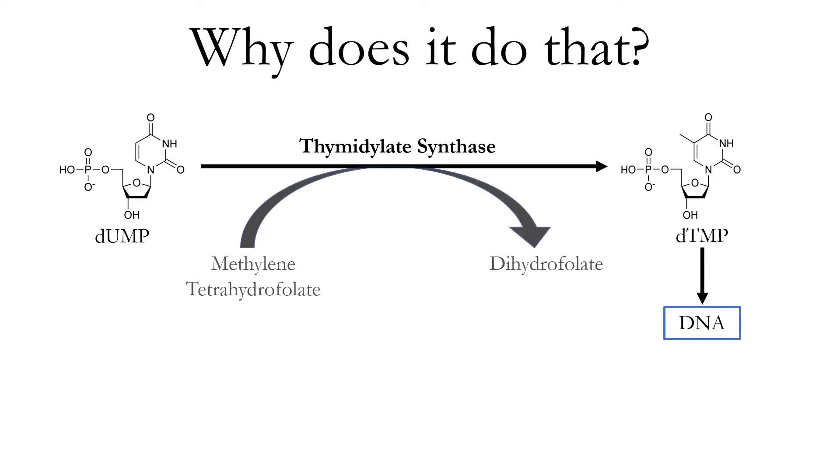This pathway requires the oxidation of methylene tetrahydrofolate into dihydrofolate, and that methylene tetrahydrofolate comes from regular old tetrahydrofolate. If the reaction shown here were to continue on into infinity, then eventually you'd have a buildup of dihydrofolate and a depletion of tetrahydrofolate. That would stop this pathway from proceeding, inhibiting DNA synthesis completely and inducing cell death.